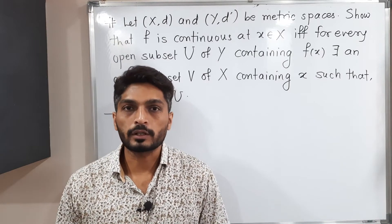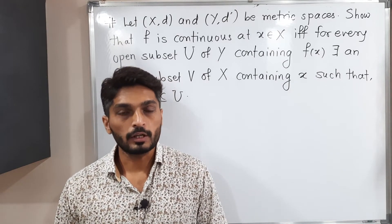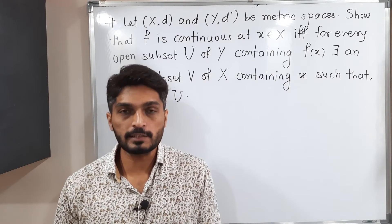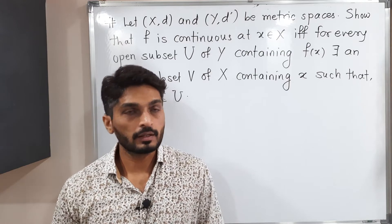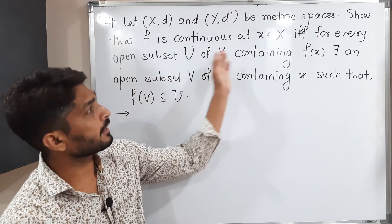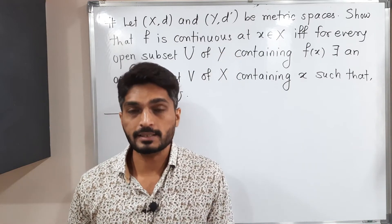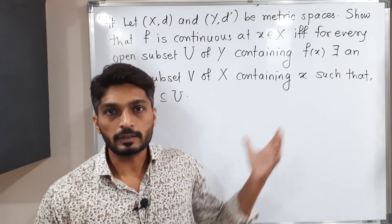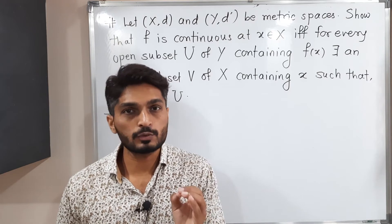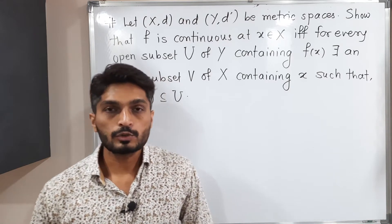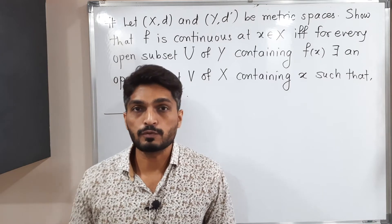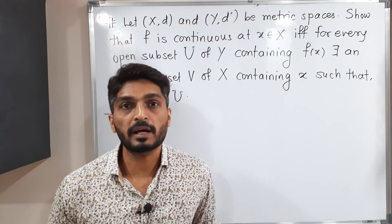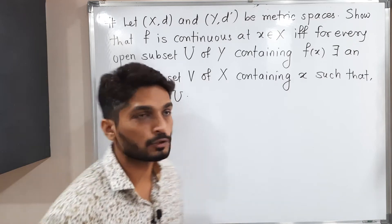Let us discuss this very important theorem of continuous functions. We have two metric spaces (X, d) and (Y, d'). If f is a function from X to Y, we have to prove that f is continuous at a point x if and only if a certain condition is satisfied. Since it is an if-and-only-if statement, we need to prove both directions.